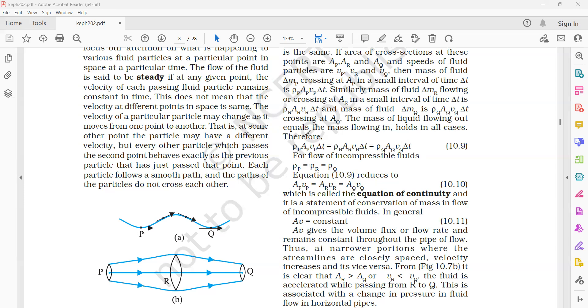So at any particular point of time, the area into velocity of the fluid that is traveling, if we multiply, that remains constant, whether it is at point P or R or Q, irrespective of that. The area into velocity remains constant. It is called the equation of continuity.